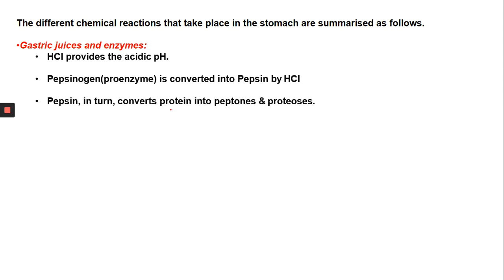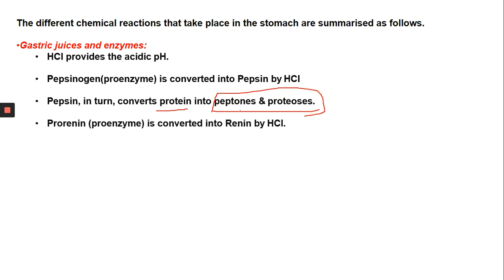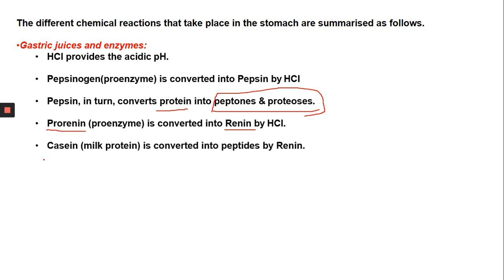Pepsin converts proteins into peptones — only proteins are broken down here, just as starch is broken down into simple sugars. Pro-renin is another proenzyme present in inactive form; it is converted into renin by hydrochloric acid. Casein is a milk protein that cannot be digested by pepsin. Instead, renin converts casein into peptides, which are smaller forms of protein.